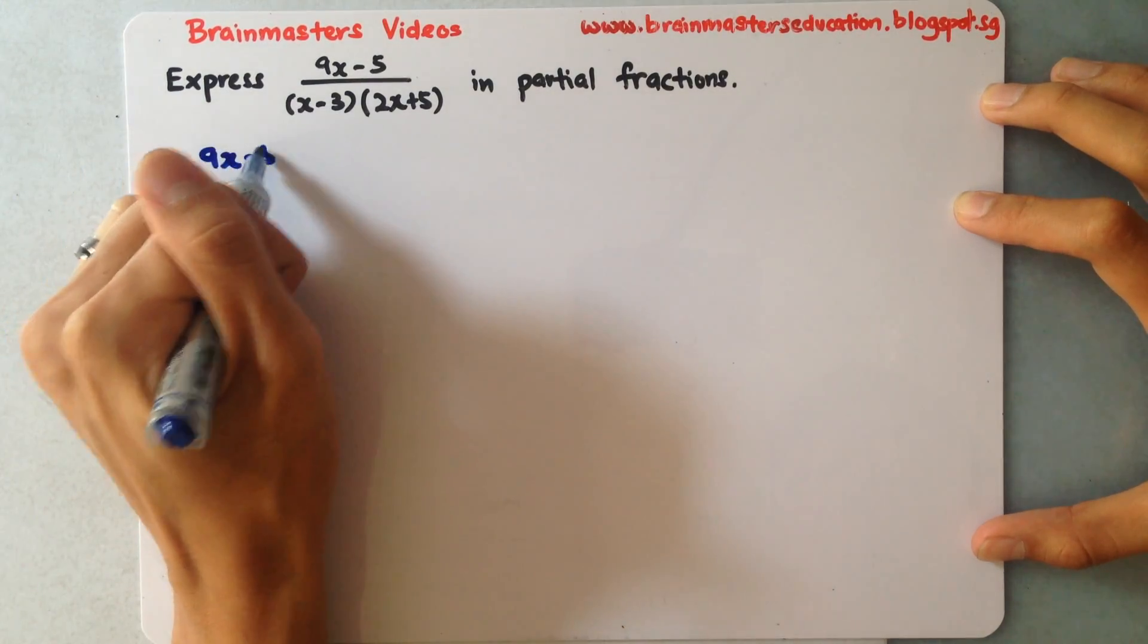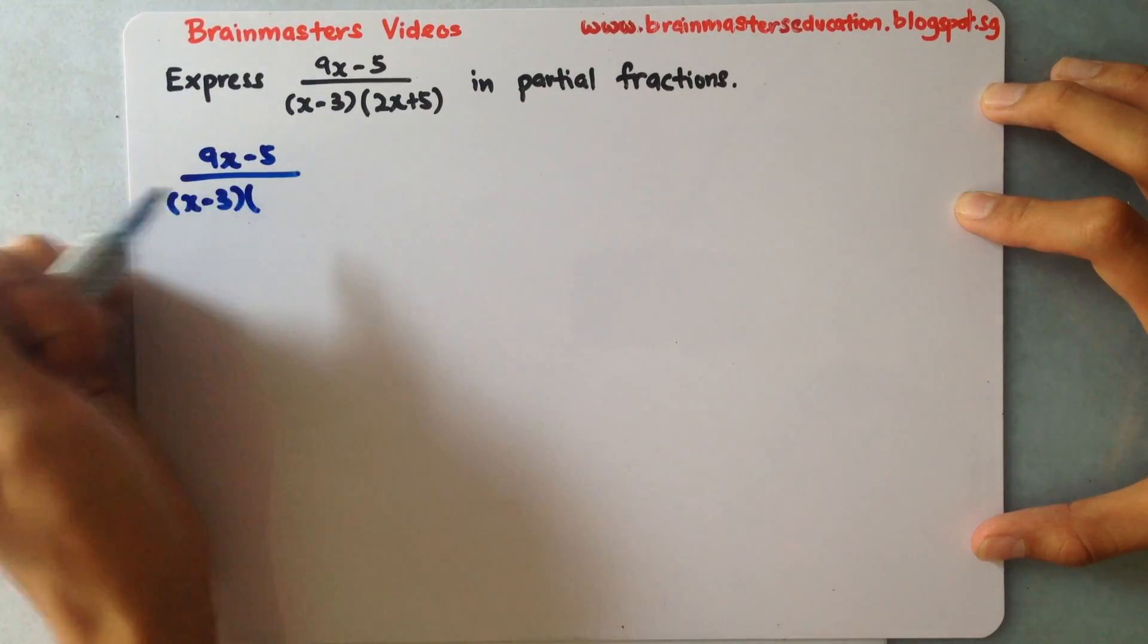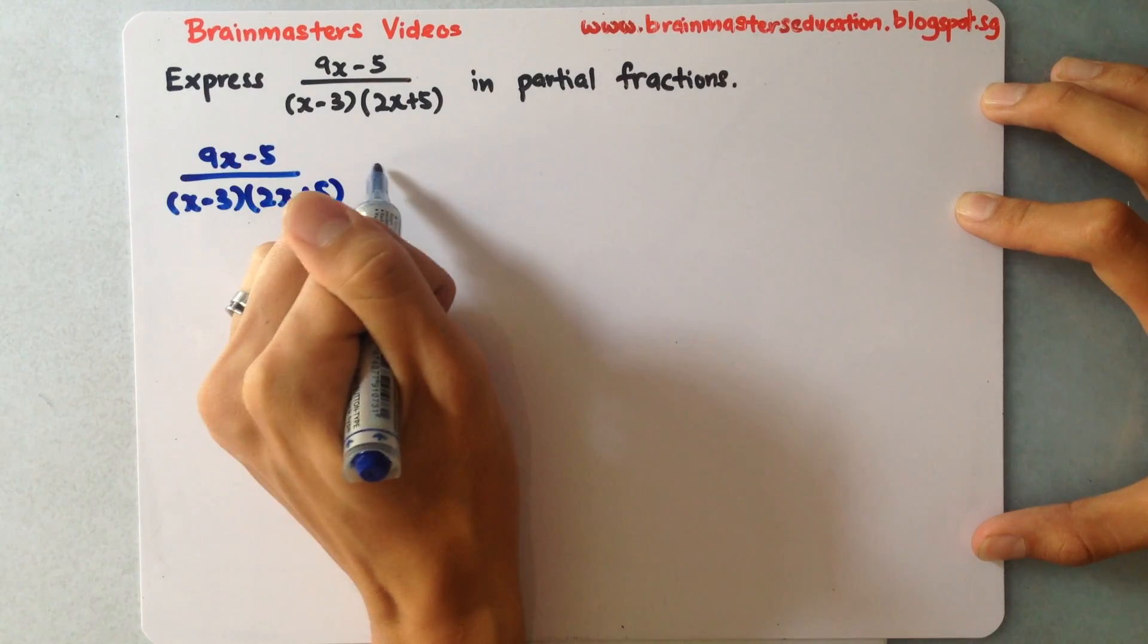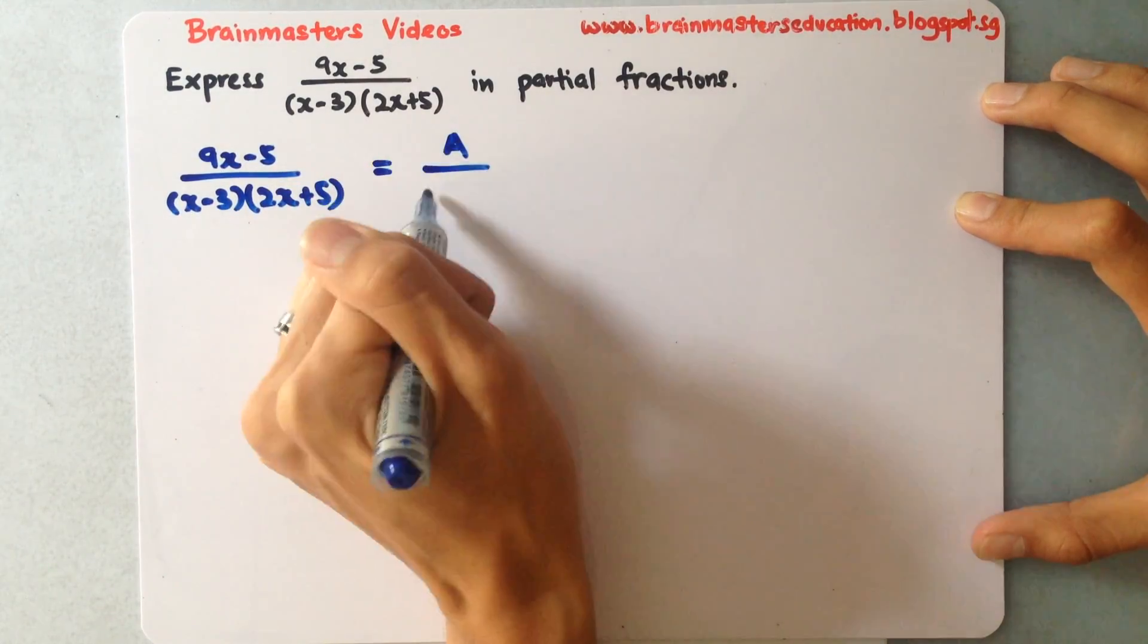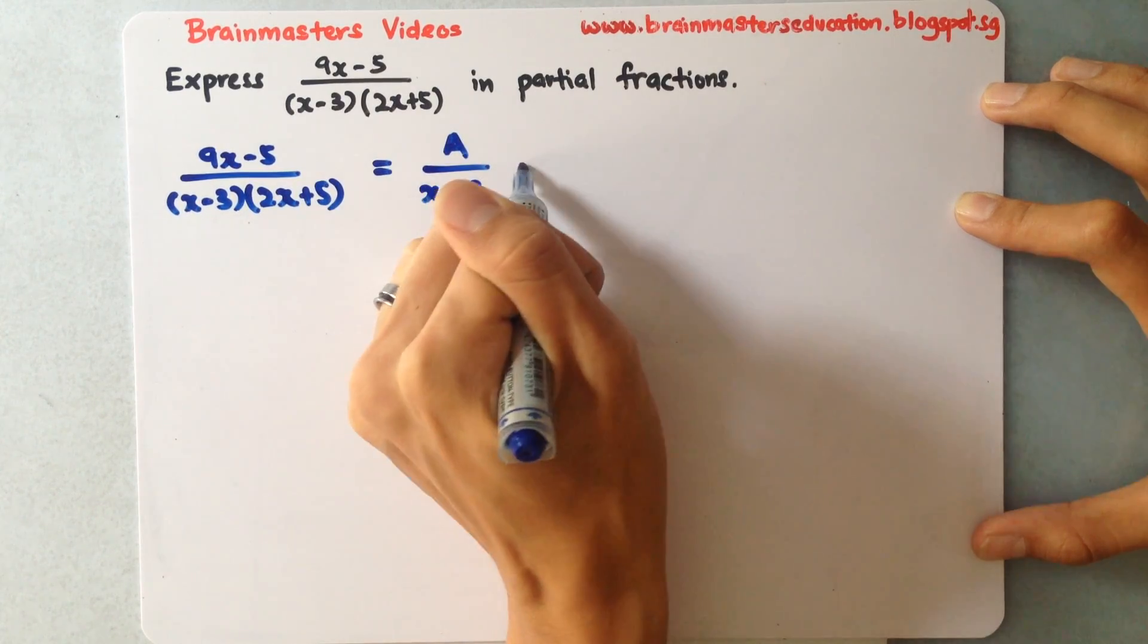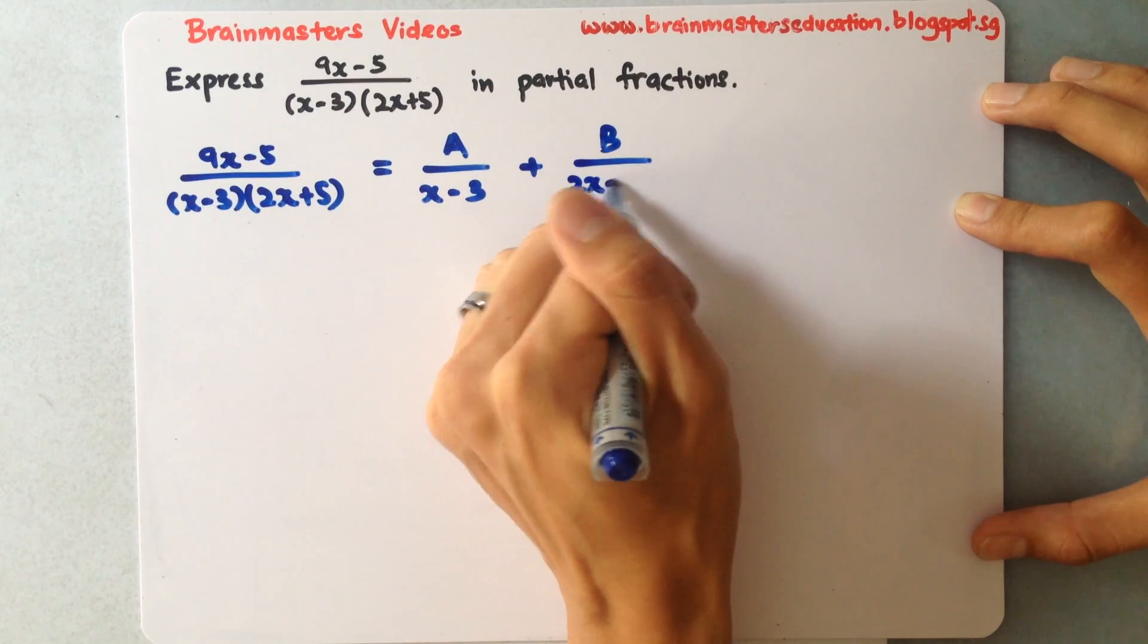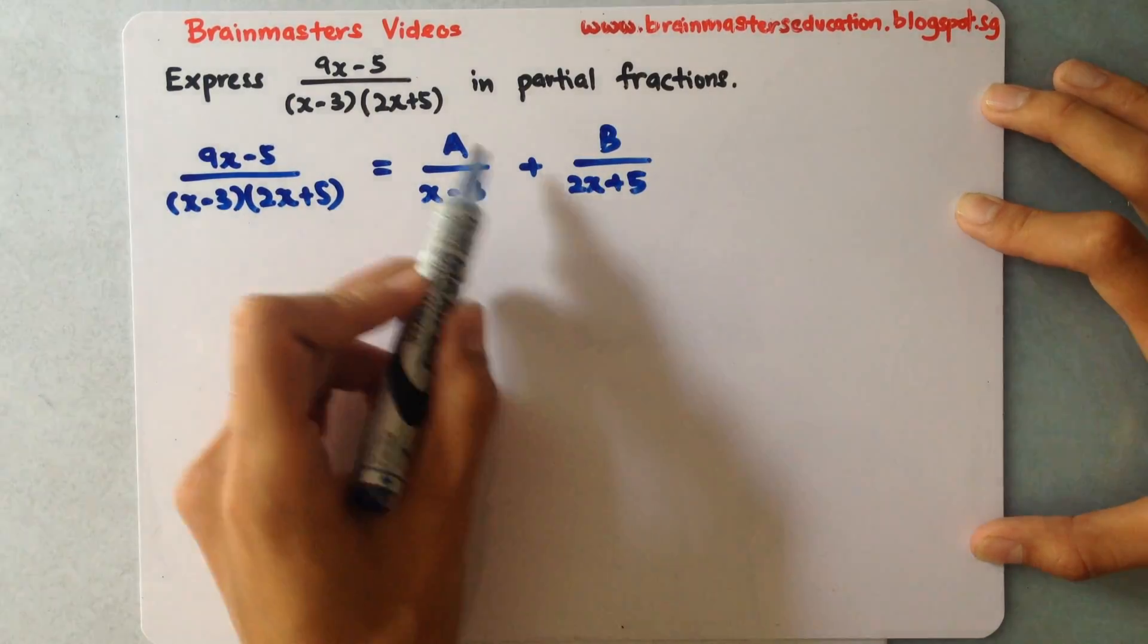Using our type 1 knowledge, you know that there are two brackets at the denominator, so you have to run into this form: separate them out equals to A over (x-3) plus B over (2x+5).